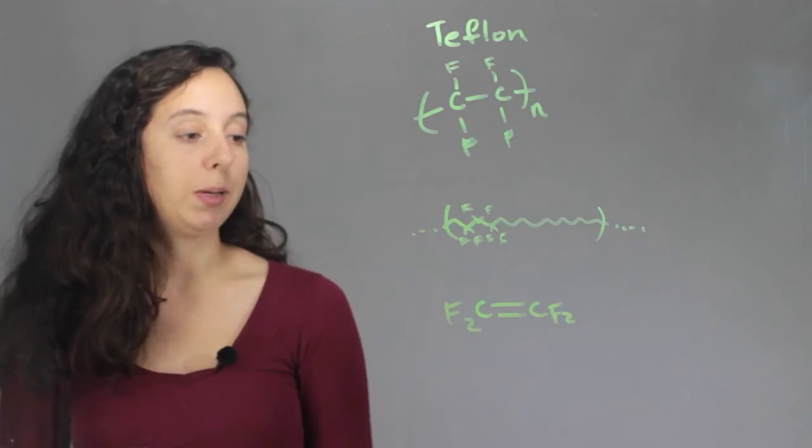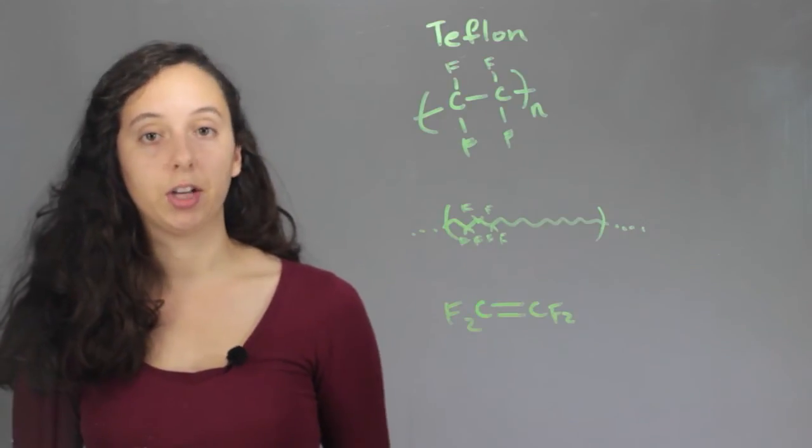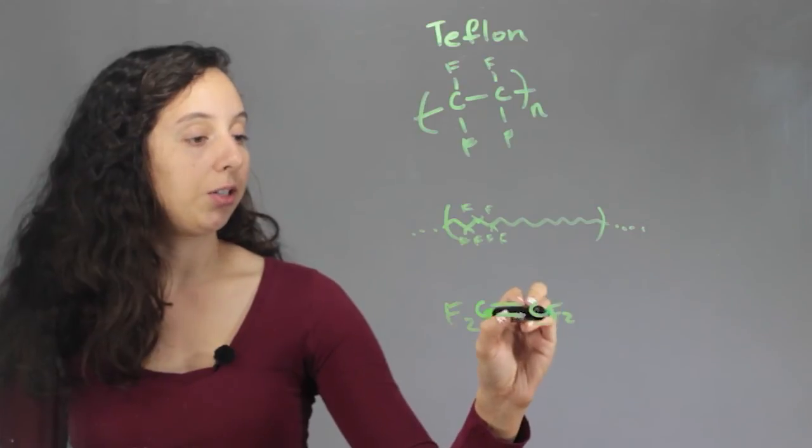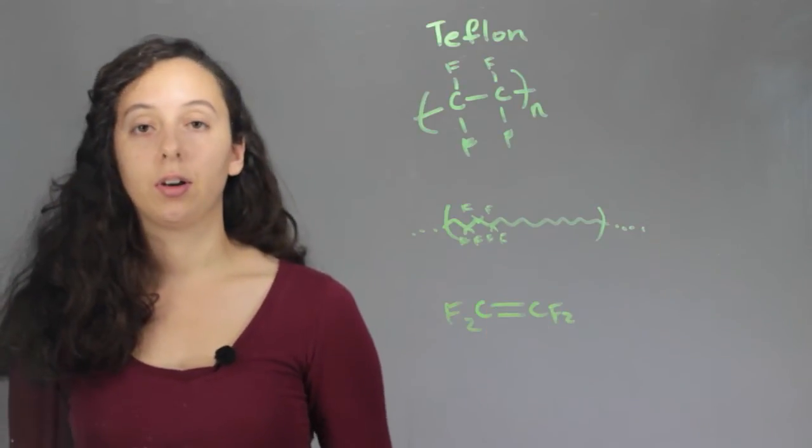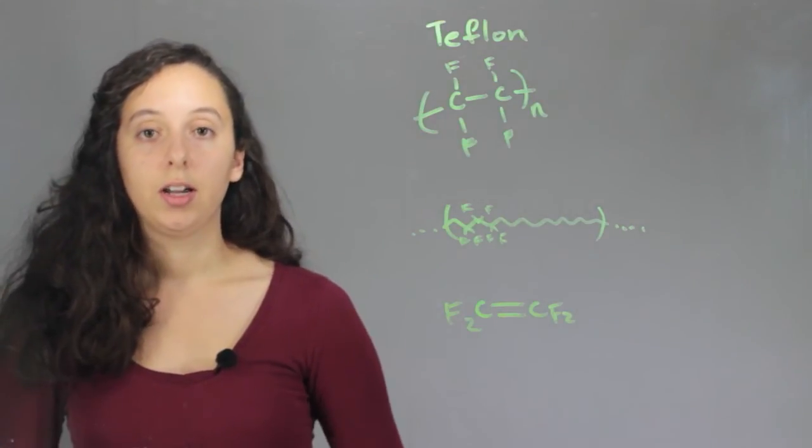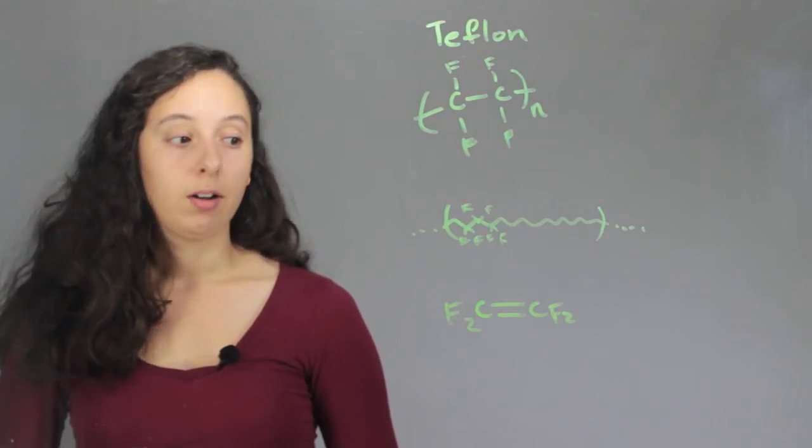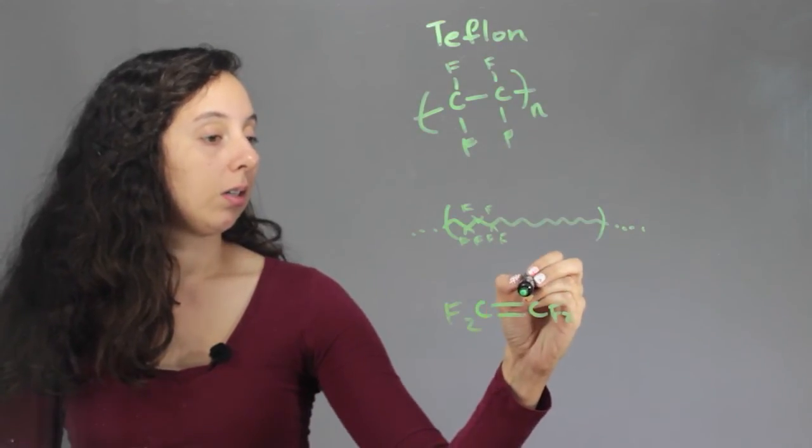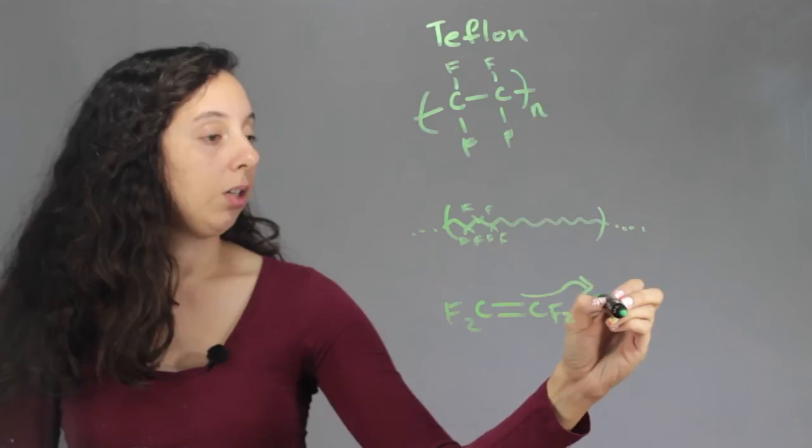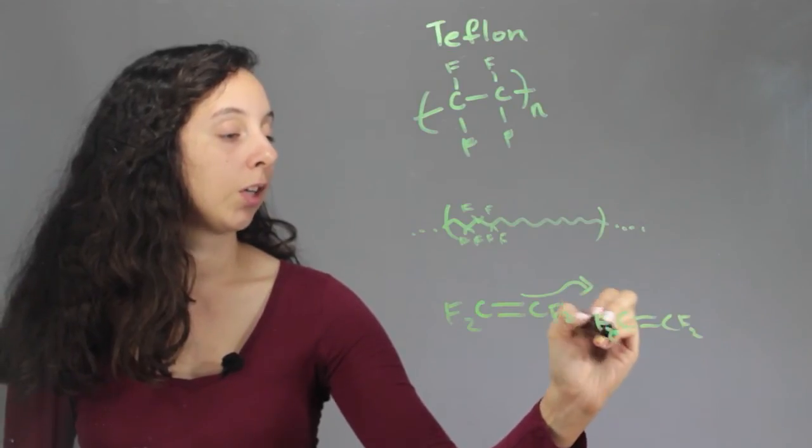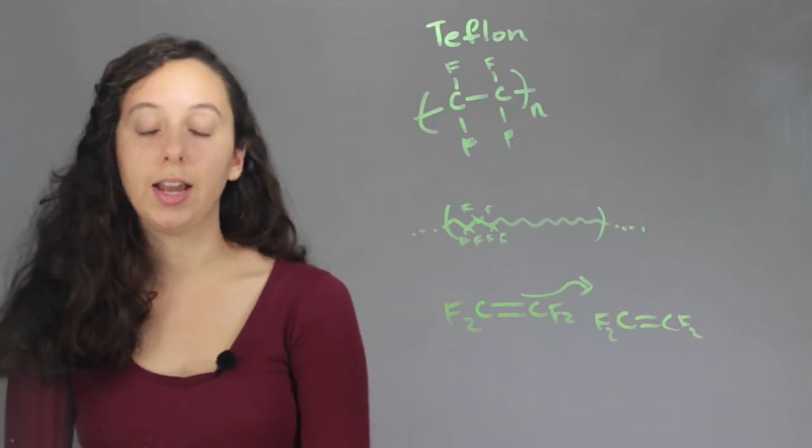The first repeating unit is this guy. So it's a double bonded carbon and it has two fluorines attached. And so the way that polymerization reactions start is by some kind of initiator. And then all of these double bonds will be used to attach themselves to the next unit.